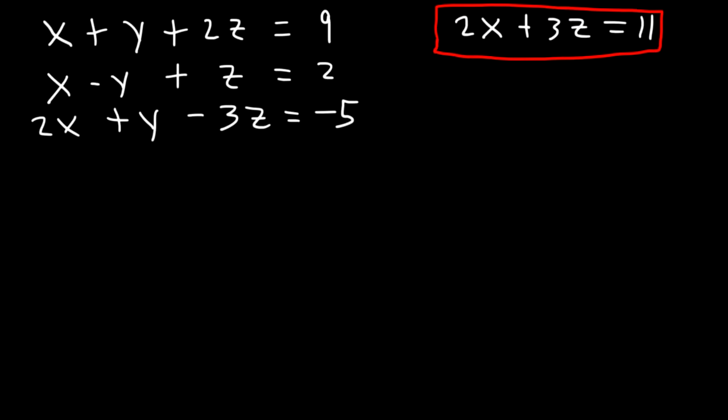Now the next thing we need to do is use equation 3. We've already used equations 1 and 2, but we have to use equation 3. We need to cancel the same variable — that is, we need to cancel y again, so that we get another equation with x and z.